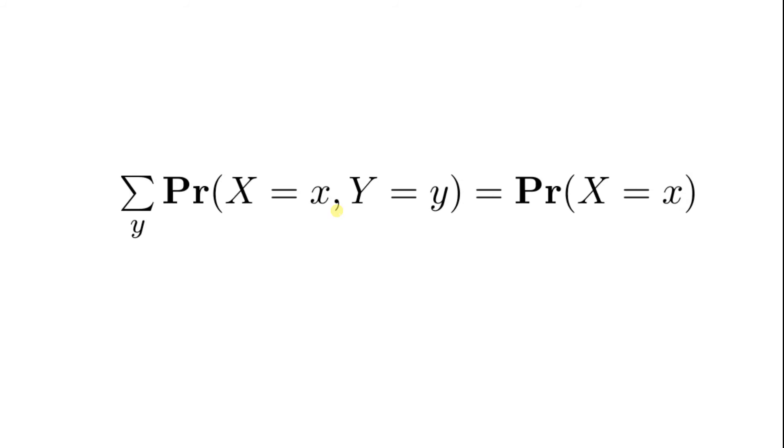We sum over the support of Y, so we're saying here we don't really care for how probable Y is because we just will accept and sum up all the possible values of Y. But X is left alone, so the probability of X actually stays the same while we sum up all the values of Y. What we are left with is just the probability of X.